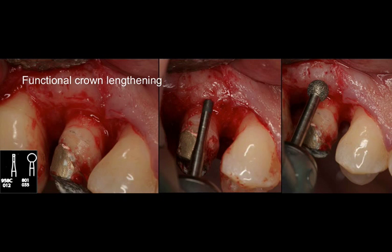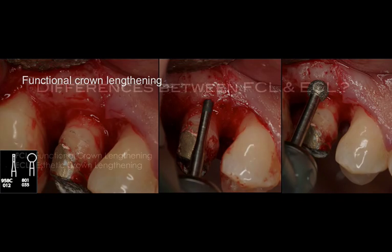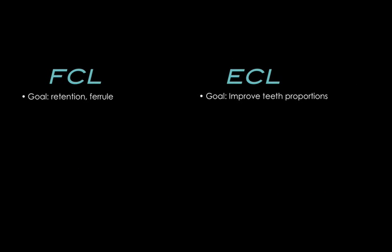When we talk about functional crown lengthening, it's most of the time to complement our restorative work — in more challenging situations where a tooth had subgingival caries or fractures and we don't have enough tooth structure to restore the tooth predictably. Both procedures involve removal of soft and hard tissue, but the reasons and goals are significantly different. With functional crown lengthening, the goal is to improve the retention of the restoration by having more tooth structure available.